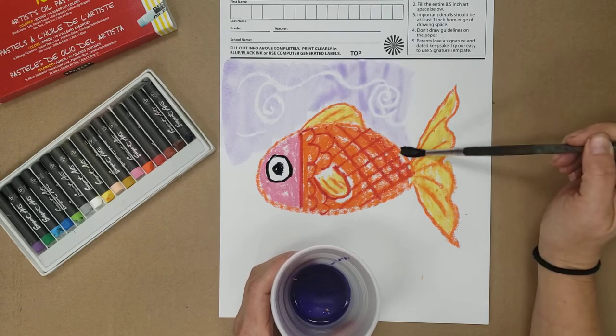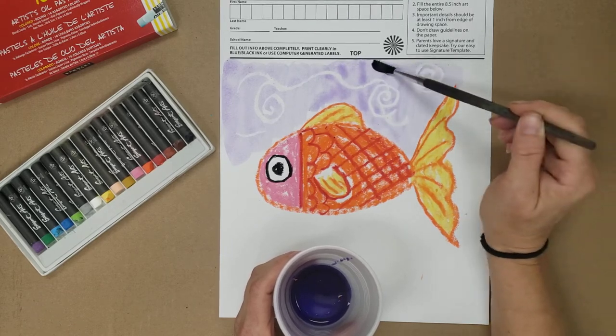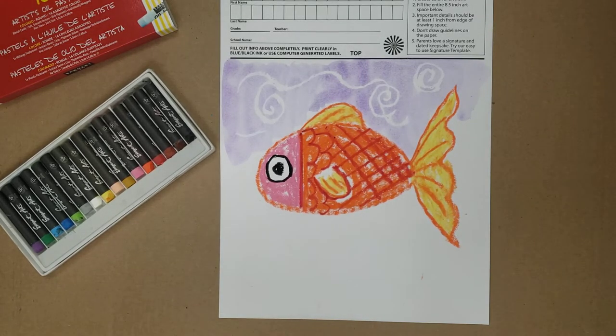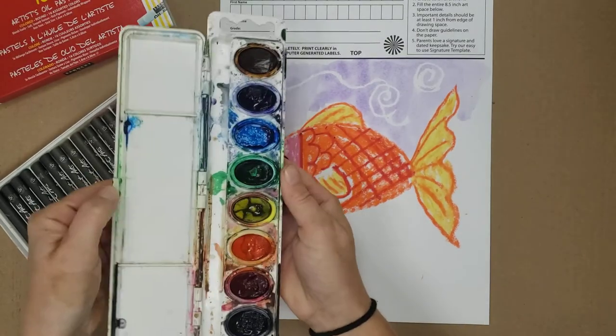I'm going to go from here and go around. See, now you can see my spirals, now you can see all of my cool curve lines I made for my water. If you're using regular watercolors they will do the same.